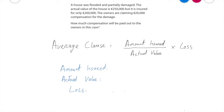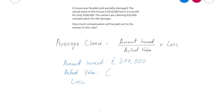Now let's fill in the information. I like to list out the information first, drawing it from the question. The amount insured: looking at the question, the house is insured for only €200,000. Next, the actual value of the house is €250,000. And last but not least, the loss — the owners are claiming €20,000 compensation for the damage, so they have a loss of €20,000.